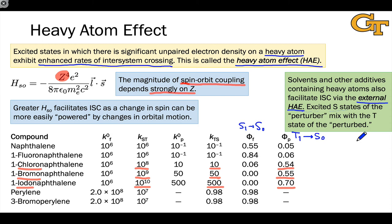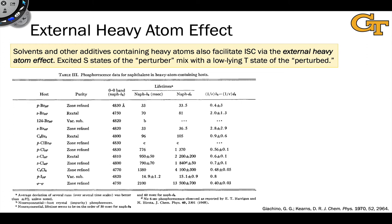This table lists data in support of the external heavy atom effect, in which researchers Giacchino and Kerns looked at the phosphorescence of naphthalene in the presence of a variety of heavy atom-containing hosts — a frozen matrix-type situation. The hosts were various substituted benzene compounds containing bromines, chlorines, and iodines, with biphenyl as a control. The control shows a very long lifetime for naphthalene, but when the heavy atoms are incorporated, the lifetimes plummet dramatically, a result of the increase in intersystem crossing associated with the heavy atom being in the vicinity of the naphthalene.